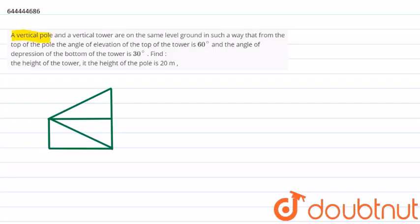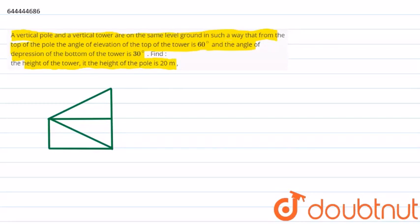Hello everyone. The question for today is: a vertical pole and a vertical tower are on the same level ground such that from the top of the pole, the angle of elevation of the top of the tower is 60 degrees and the angle of depression of the bottom of the tower is 30 degrees. We need to find the height of the tower if the height of the pole is 20 meters.